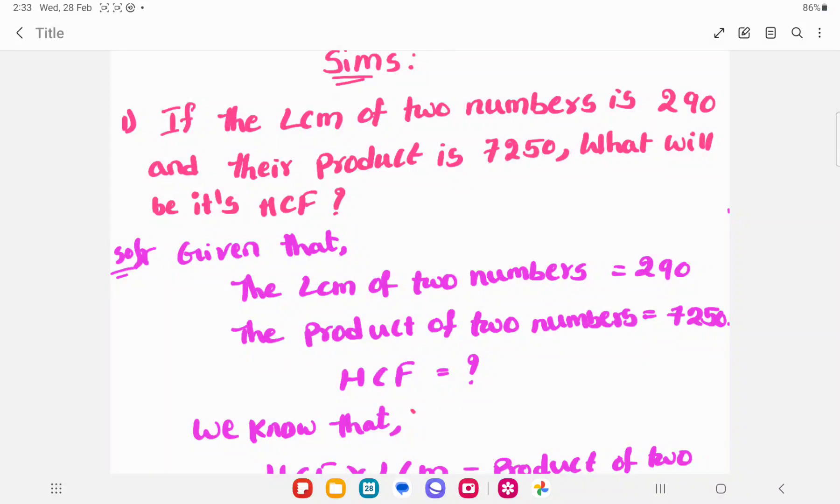Hi, welcome to SIMS. Today's sum: If the LCM of two numbers is 290 and their product is 7250, what will be its HCF?